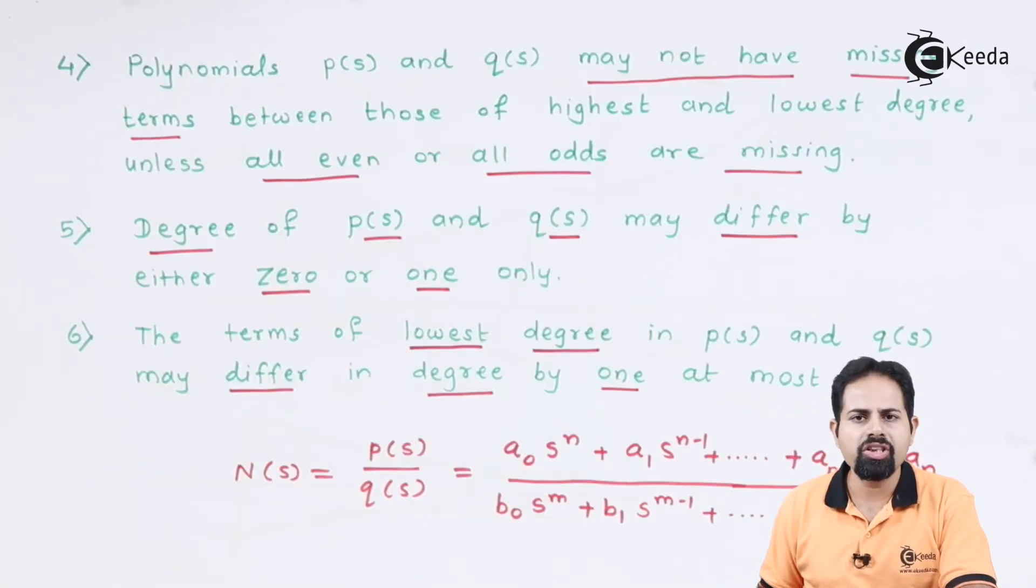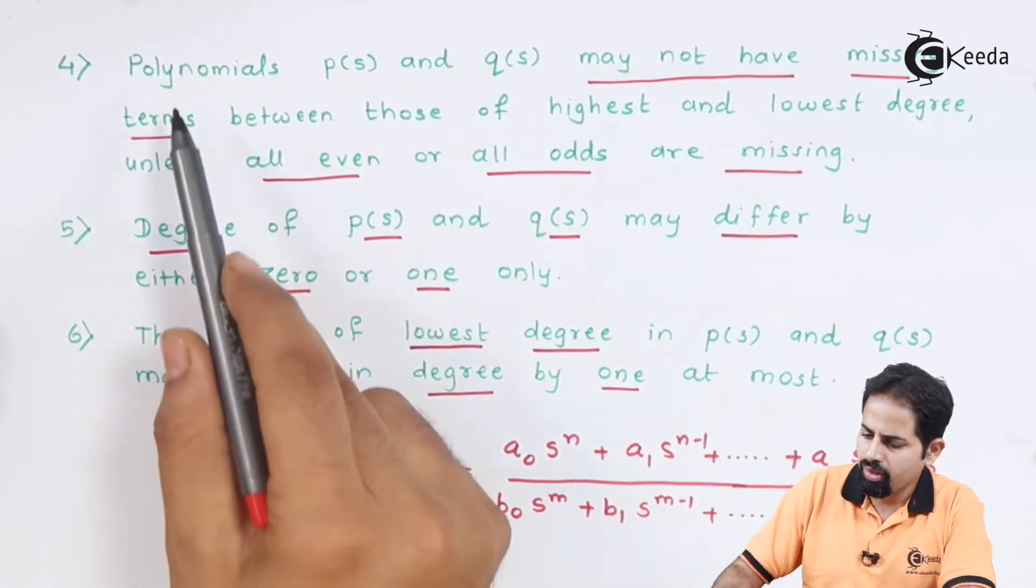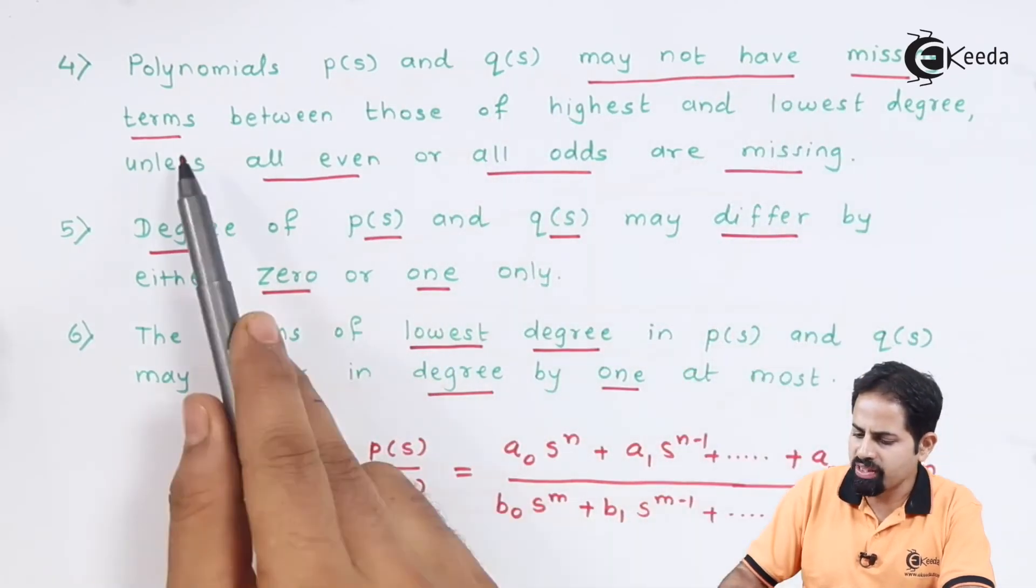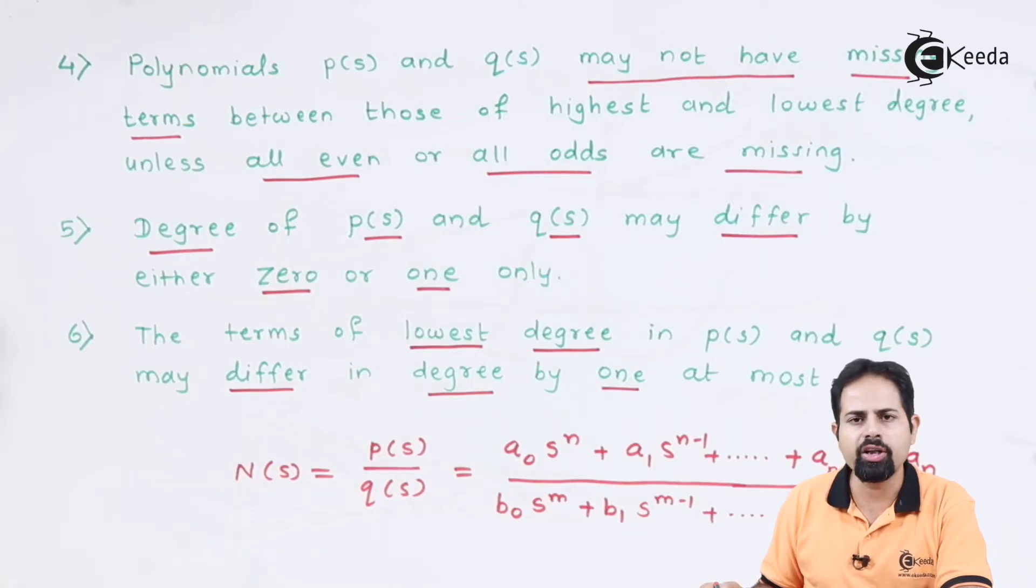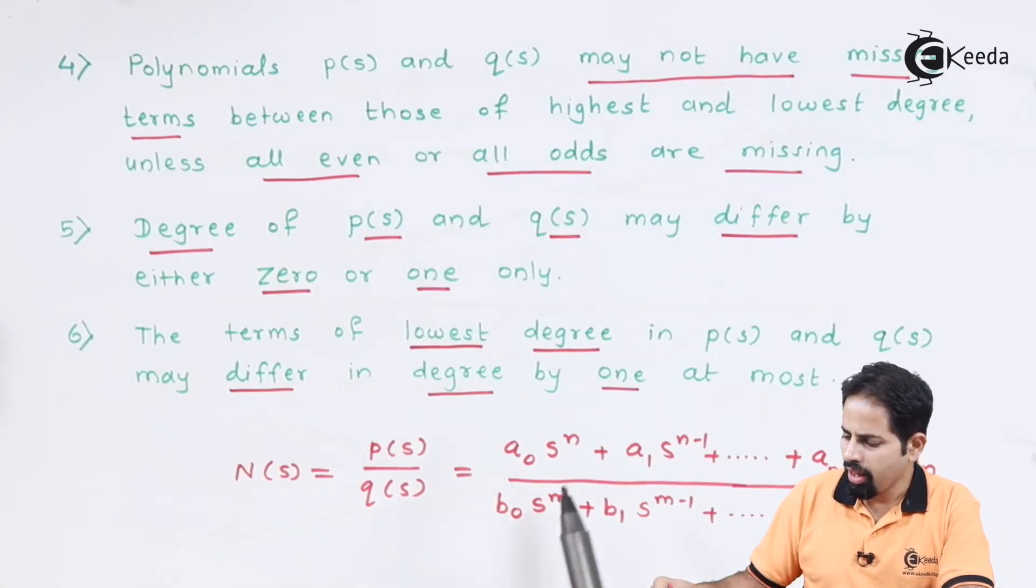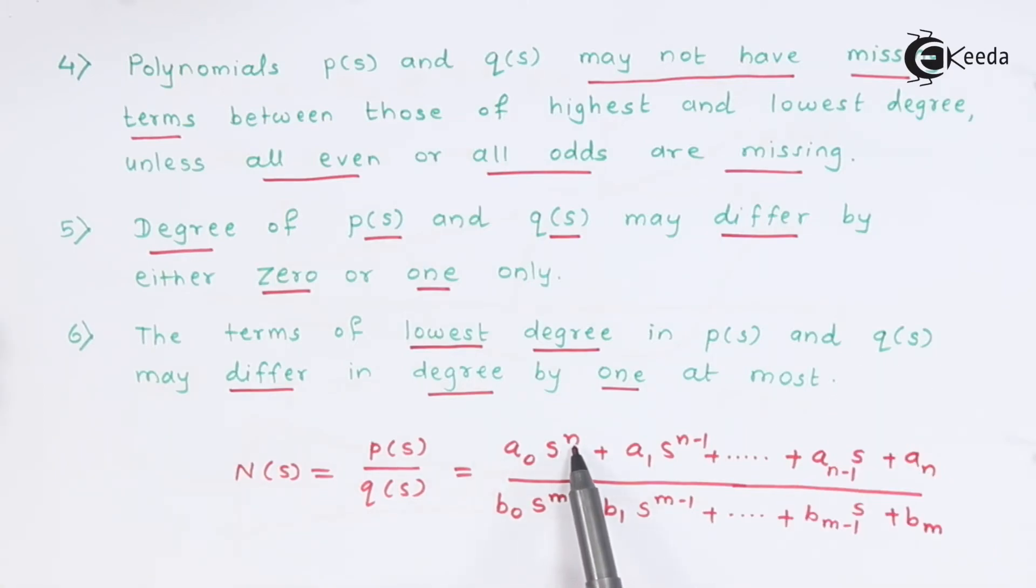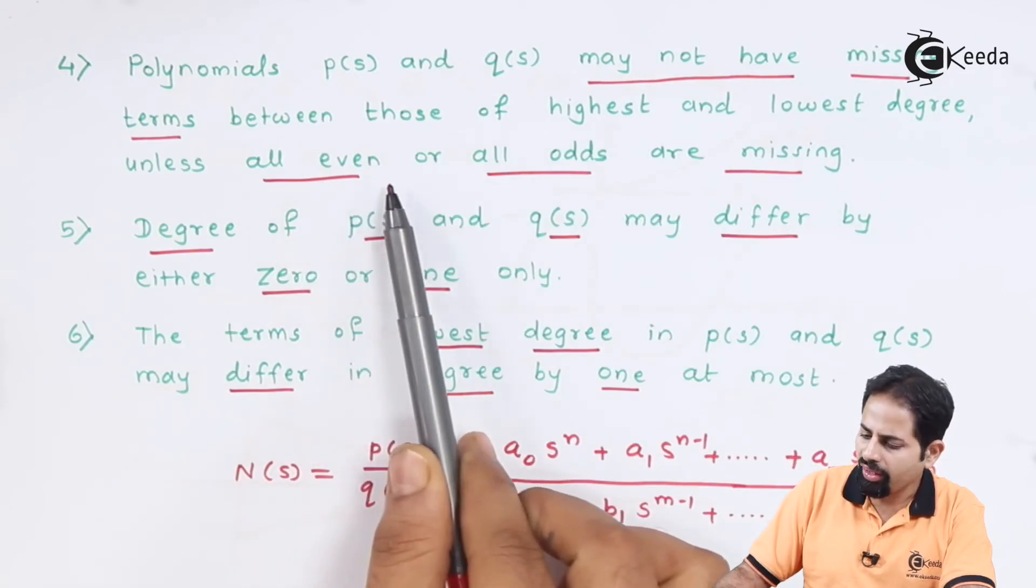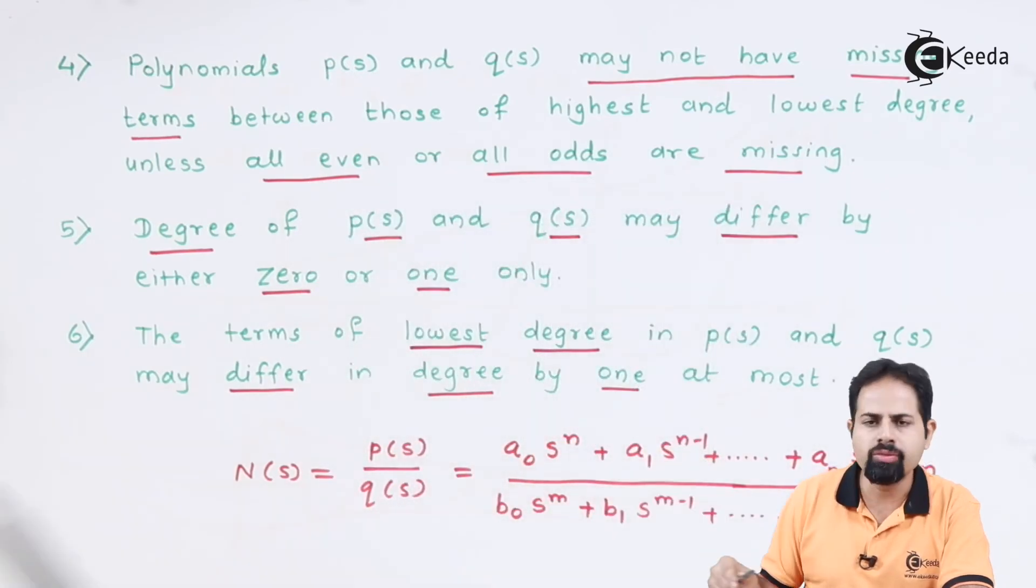That is a condition. Now the condition number four is the polynomials P of S and Q of S. They may not have missing terms between those of highest and lowest degree. Means suppose this is order four, then four, three, two, one, zero, all must exist. If this is of order three, then three, two, one, zero. These are all orders of S. They all must exist except there can be a case where all even or all odd terms can be missing.